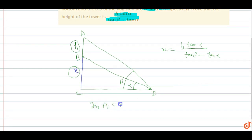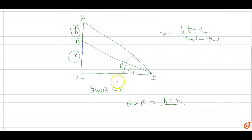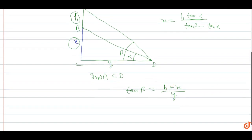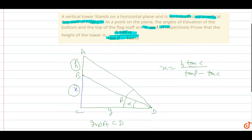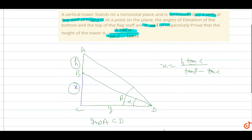In triangle ACD, tan beta equals the altitude over the base. The altitude is h plus x, and the base is y. So h plus x equals y tan beta. This is equation 1.